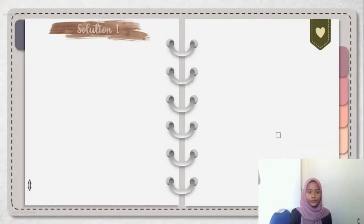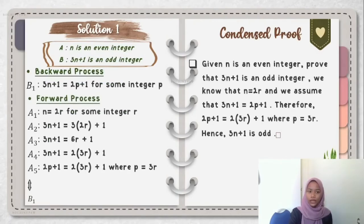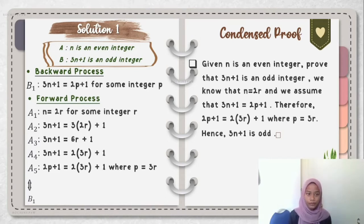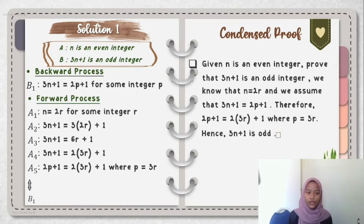For solution 1, first of all, we must state what is A and what is B, which are the hypothesis and conclusion. A is: N is an even integer. B is: 3N plus 1 is an odd integer. For the backward process, we must take the statement from statement B only. Statement B is: 3N plus 1 is an odd integer. So B1: 3N plus 1 is equal to 2P plus 1, for some integer P.